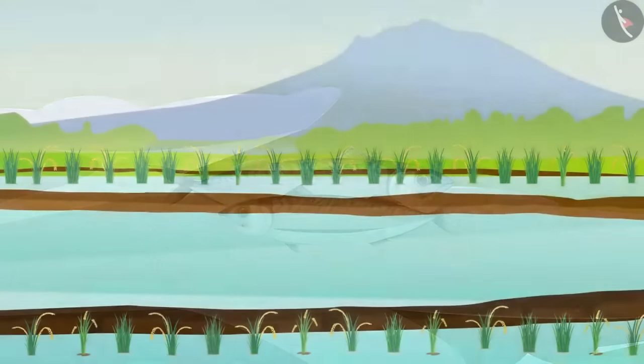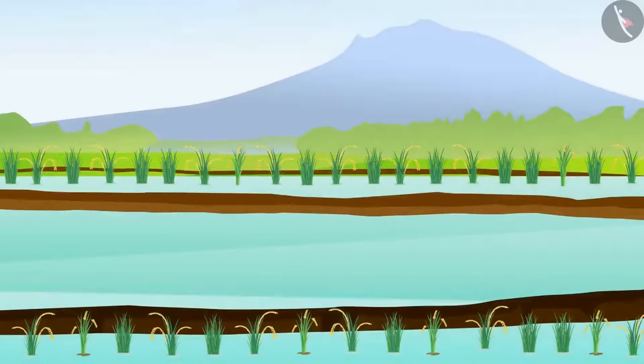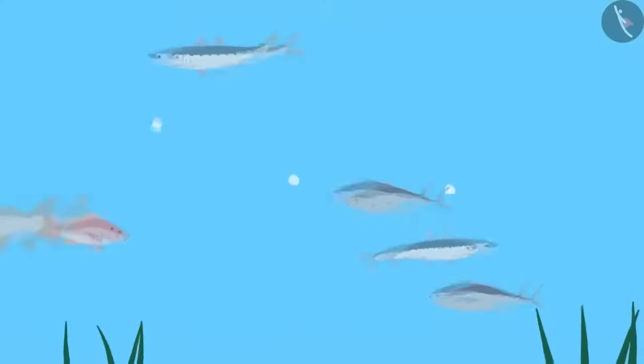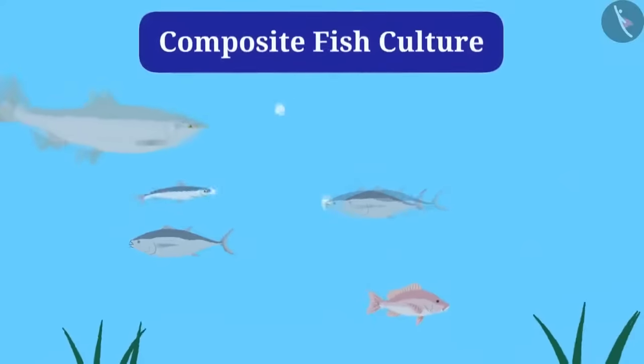Do you know that fish culture is also done with rice crops, so that fish can grow in water provided to the crop. This system is called composite fish culture.